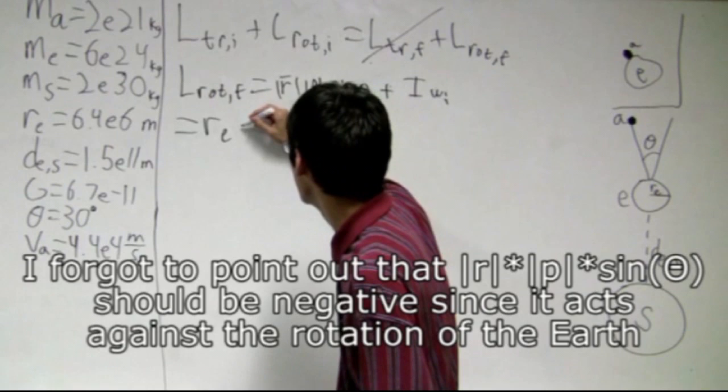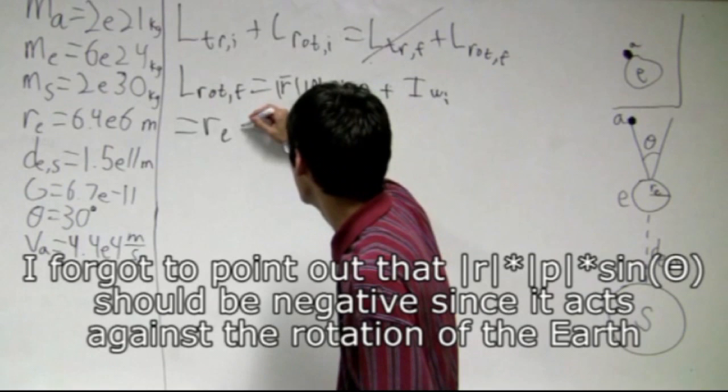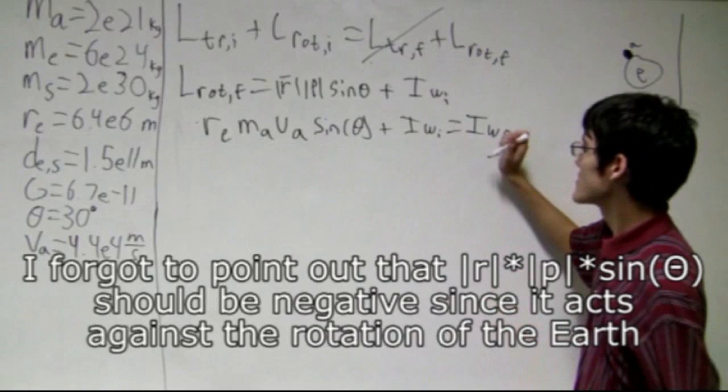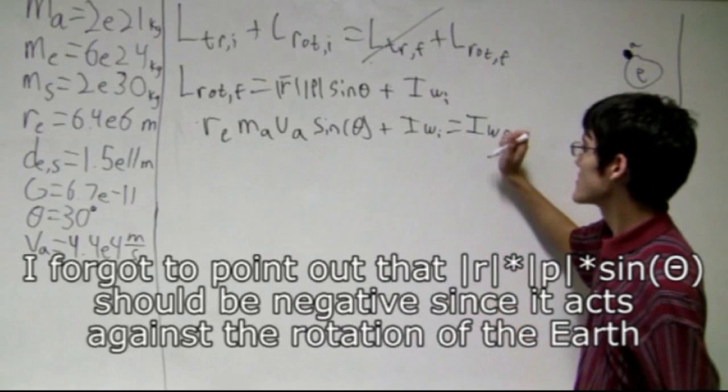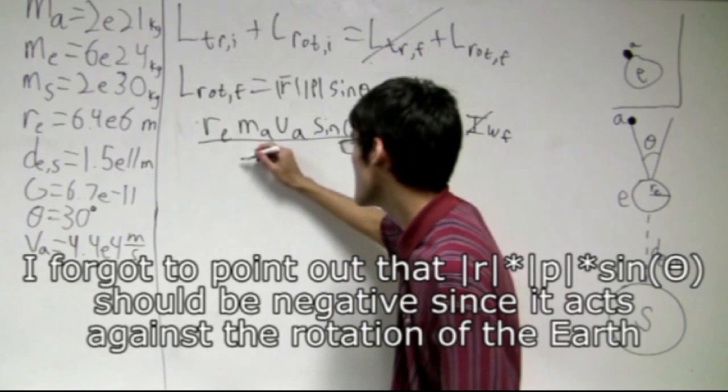This R P sin theta is going to end up being the radius of the Earth times the mass of the asteroid times the velocity of the asteroid sin theta, plus I omega_i equals I omega_f. If we divide out I from both sides, so what is I? I, in this case, is going to be two-fifths the mass of the Earth times the radius of the Earth squared.